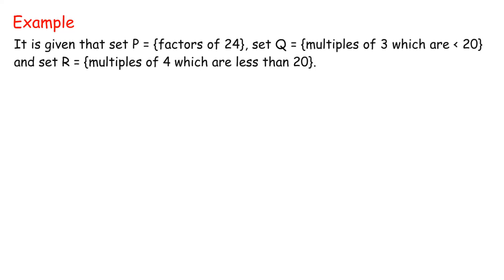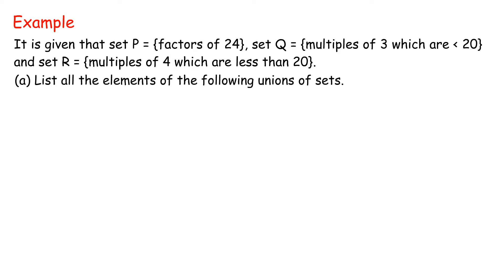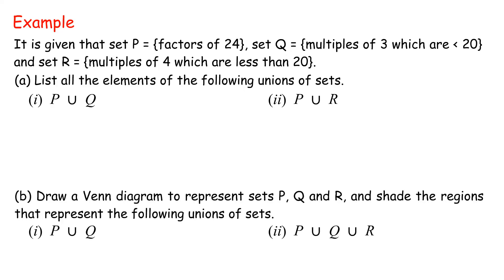Example. It is given that set P equals {factors of 24}, set Q equals {multiples of 3 which are less than 20}, and set R equals {multiples of 4 which are less than 20}. Part A: List all the elements of the following unions of sets. 1. P union Q, 2. P union R. Part B: Draw a Venn diagram to represent sets P, Q, and R, and shade the regions that represent the following unions of sets.